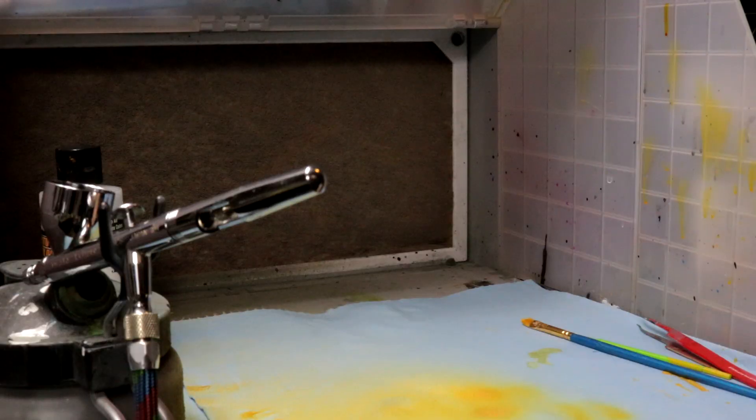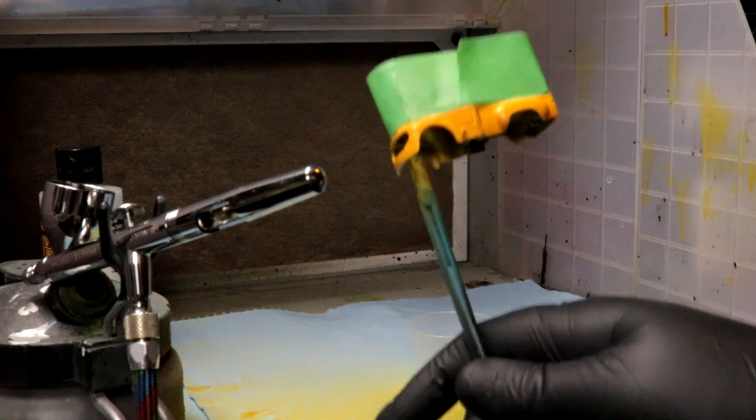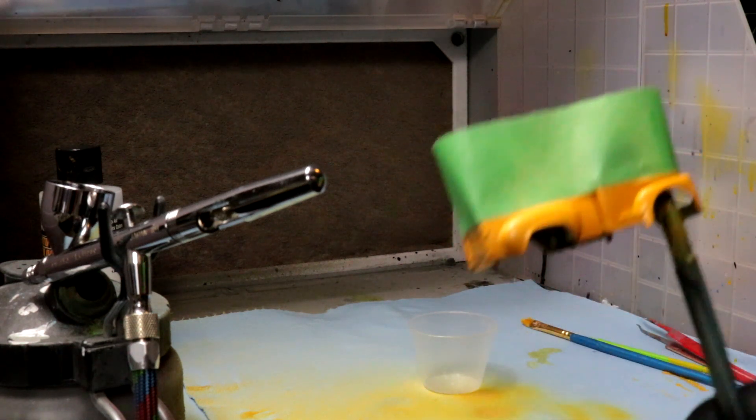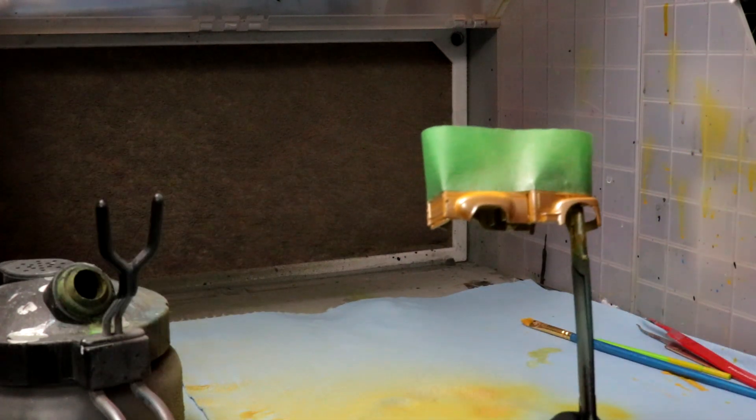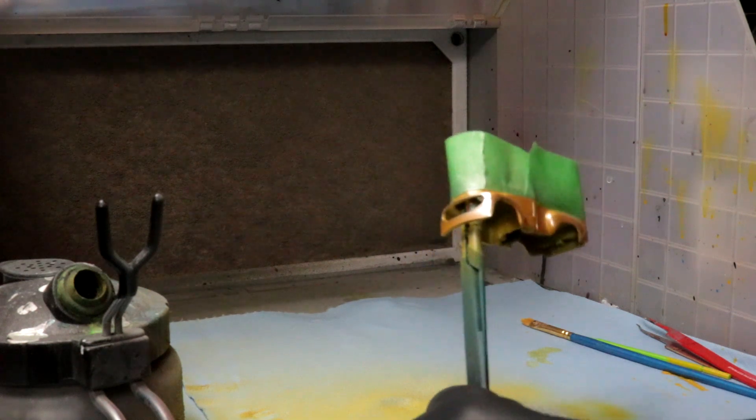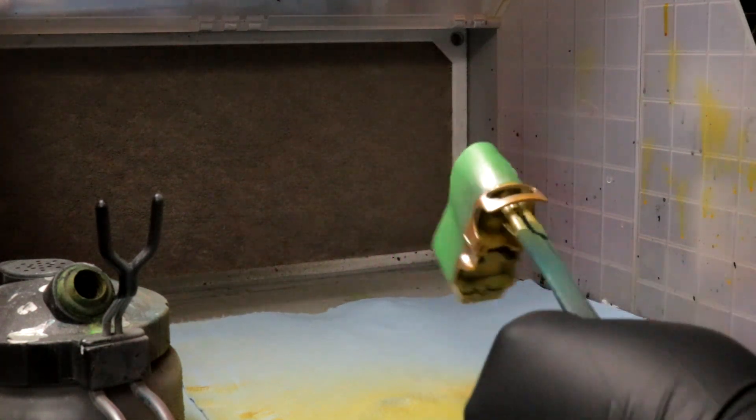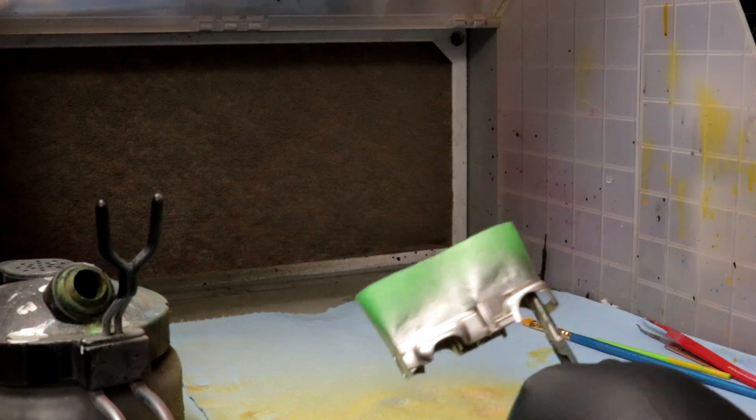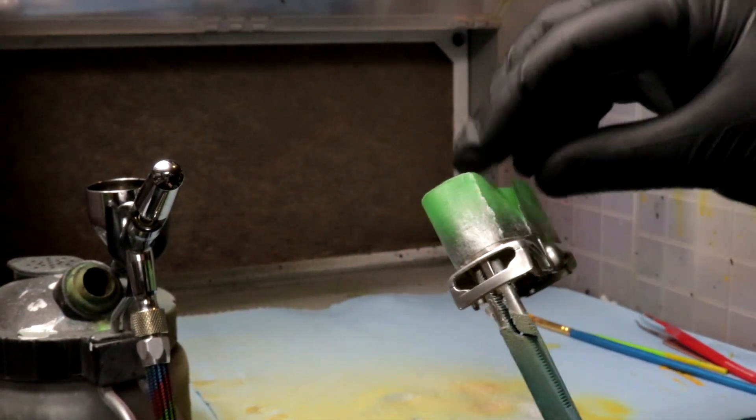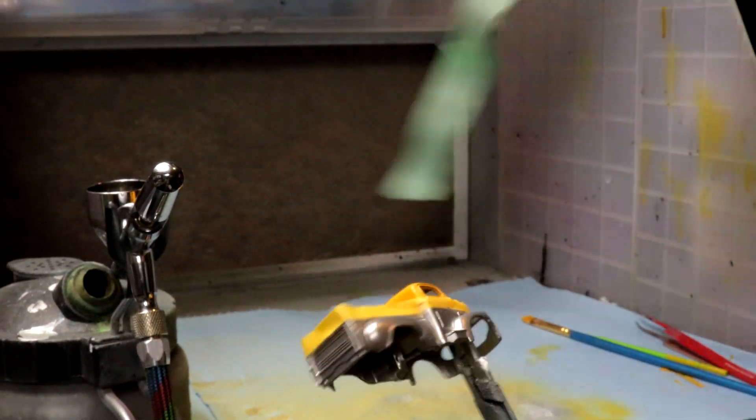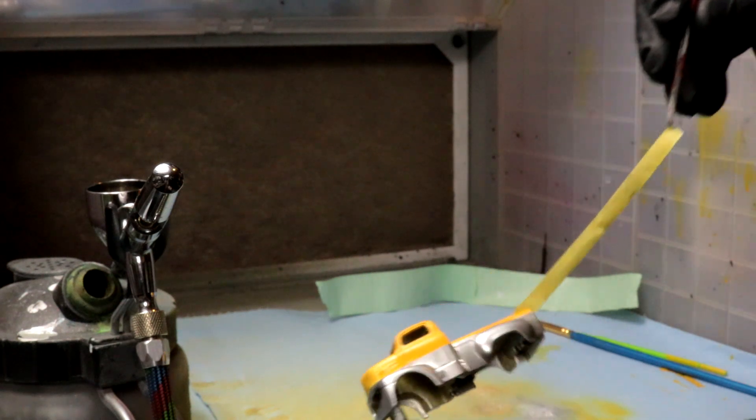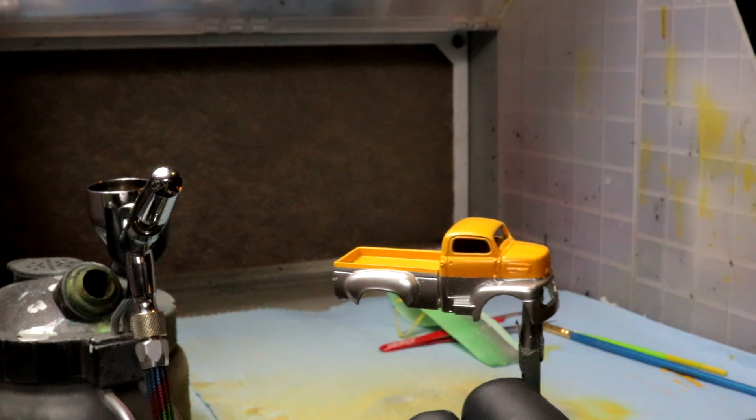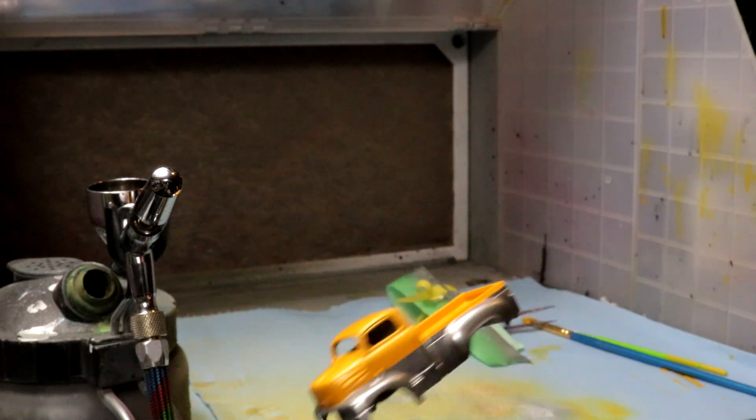Okey dokey, so I have masked off a little buggy here and my intention is to get kind of a silver on the bottom. I'm going to let this dry for a little bit and then I'm going to hit the whole thing with some sparkles and then we're going to clear coat this bad boy.